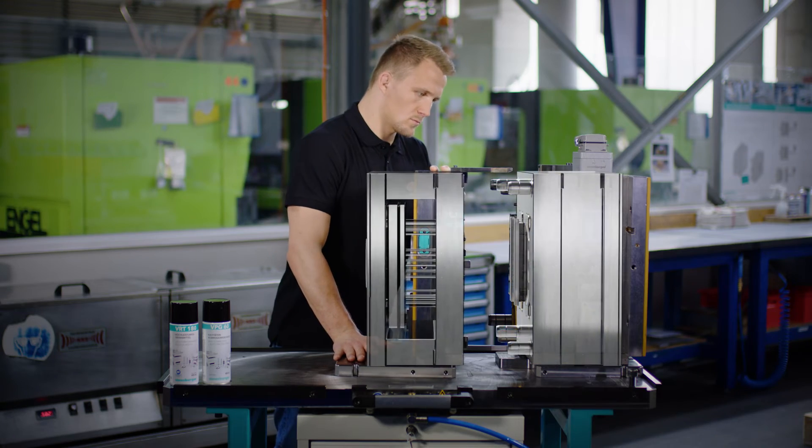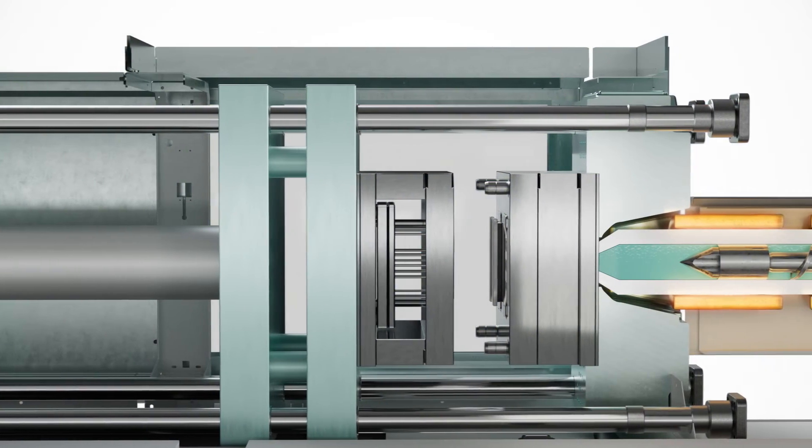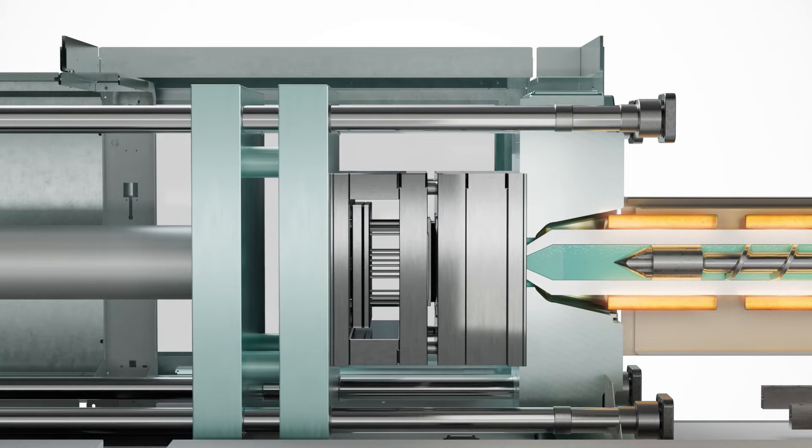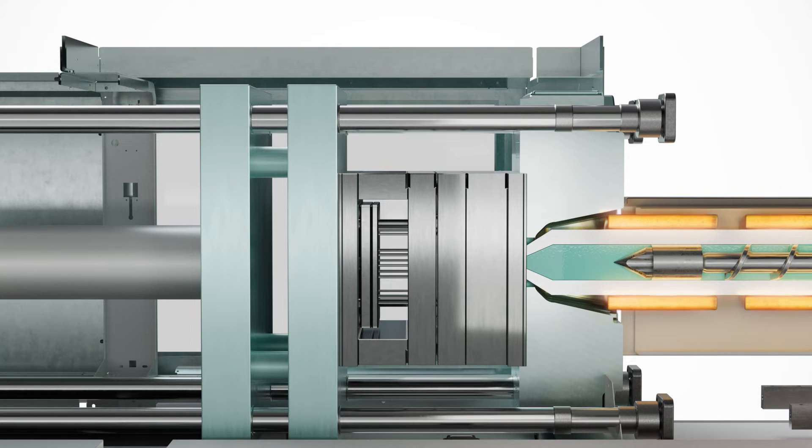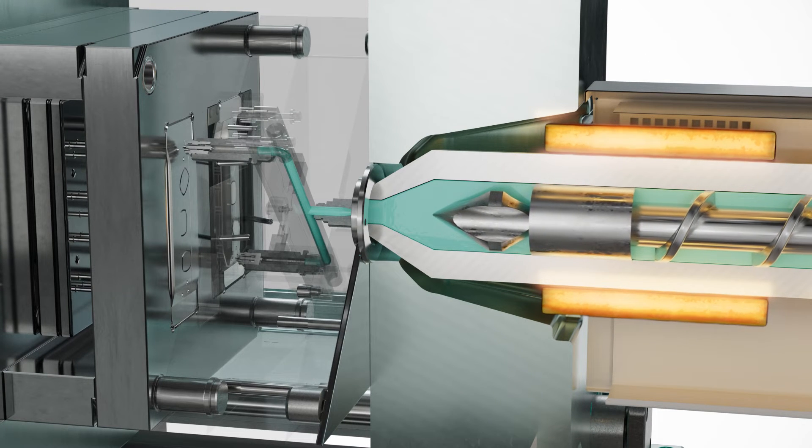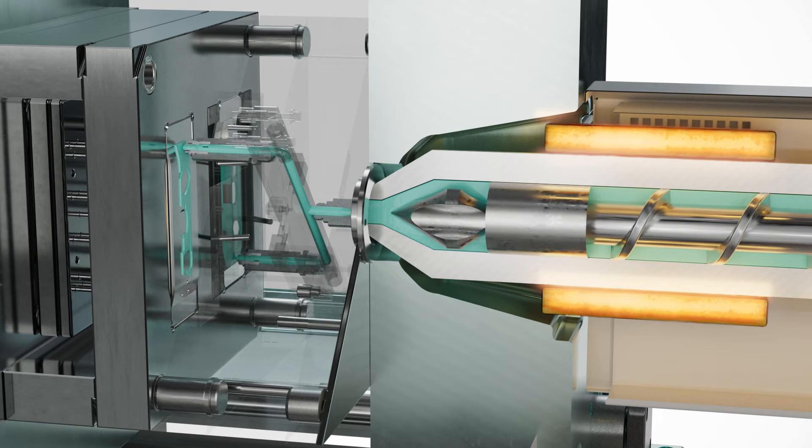75 tons of closing force hold the two halves firmly together. In just 1.6 seconds and using 800 bars of pressure, the extruder screw pushes the molten plastic completely into the cavity.